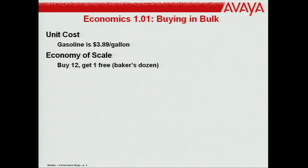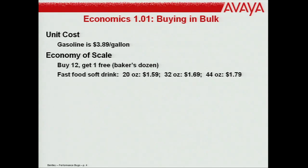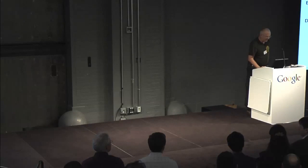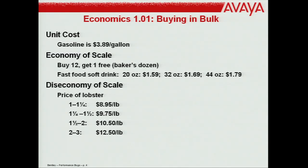Buy 12 get one free — that's a baker's dozen. Fast food essentially penalizes you for not getting super-large drinks. The incremental cost of getting bigger isn't that much. On the other hand, sometimes there are diseconomies of scale. The lobster restaurant: the bigger the lobster, the more it costs per pound. A one-pound lobster costs nine bucks; a two-to-three pound lobster costs 25 bucks. Sometimes there's a diseconomy of scale — the more you buy, the more it costs per unit.